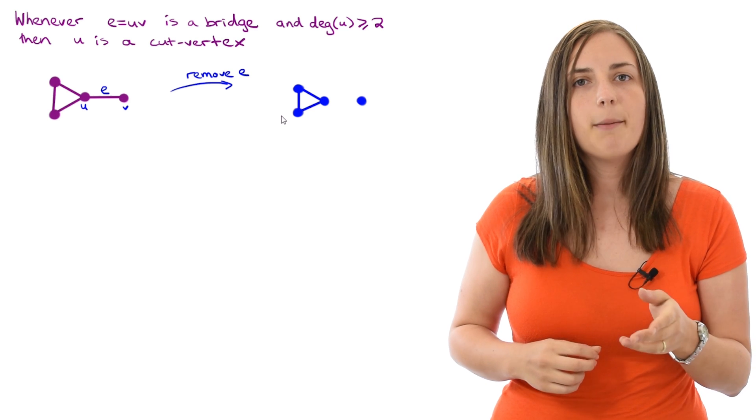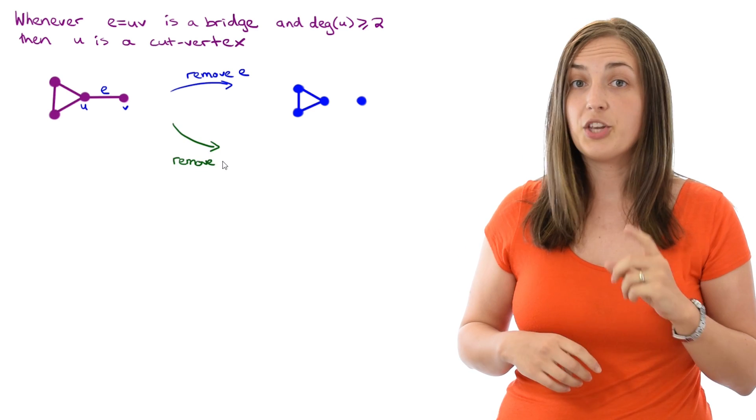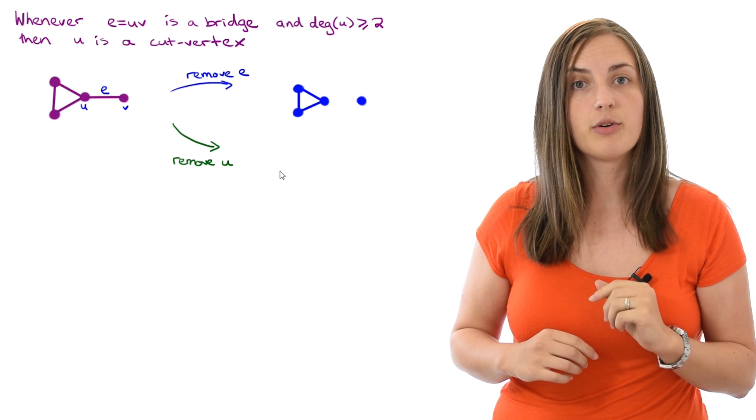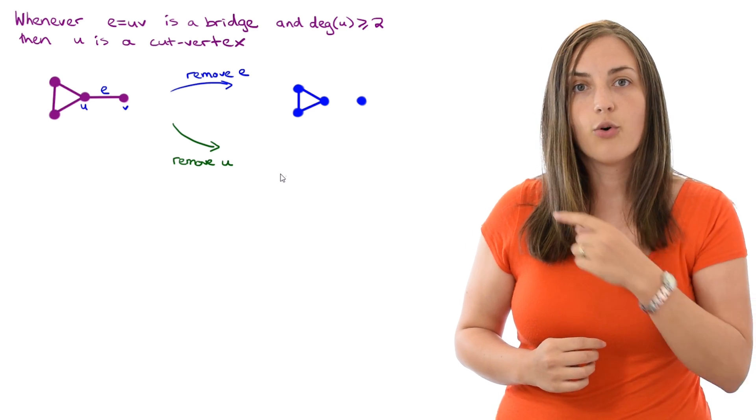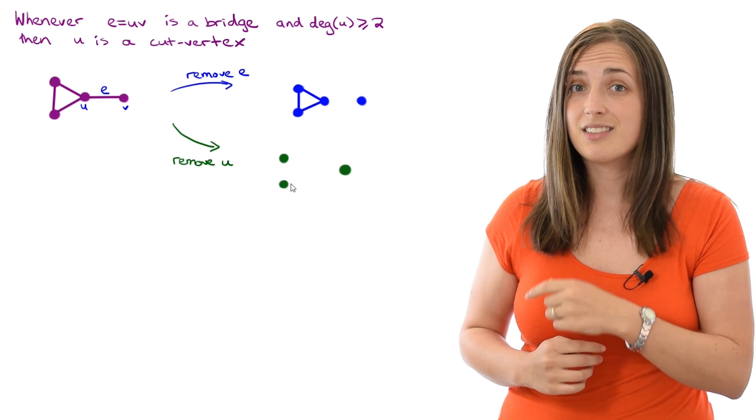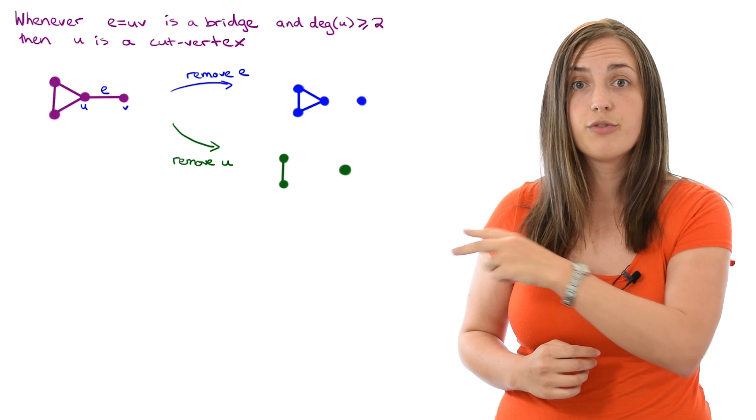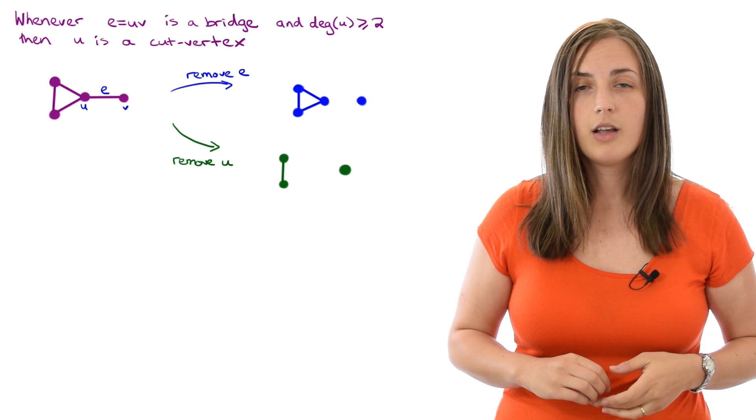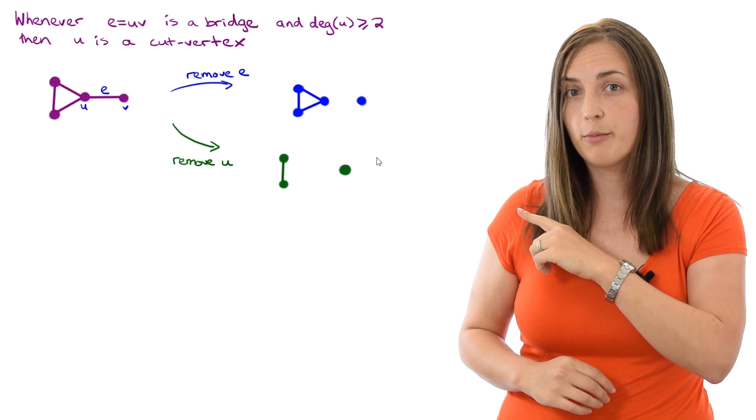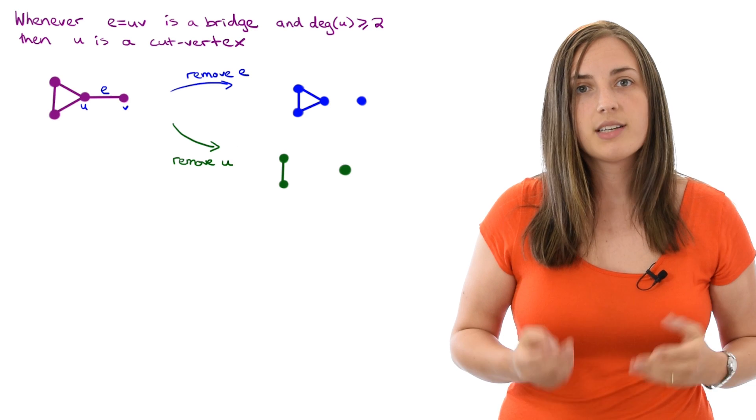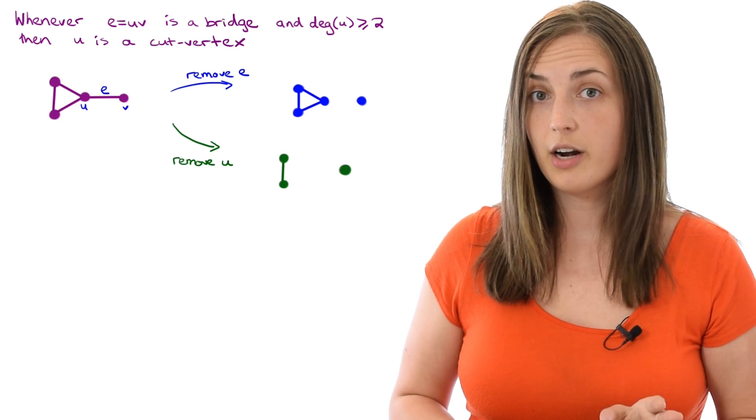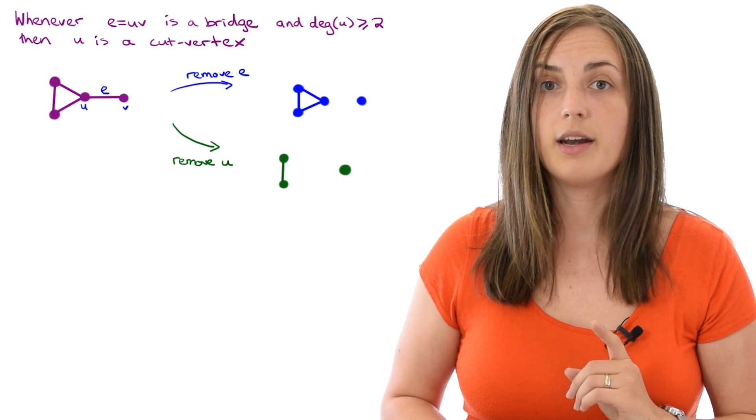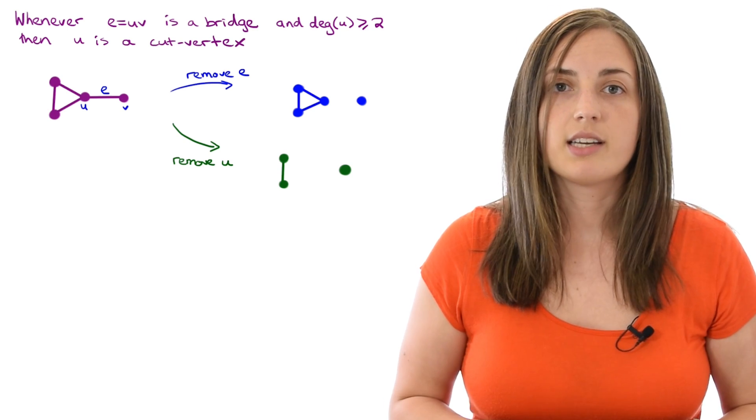Okay, but what happens when you remove the vertex u? When you remove a vertex, you also need to remove all of the edges that used to be incident with that vertex. So the result will look something like this, an isolated vertex and then two vertices connected by an edge. So there is a difference between removing the bridge and removing just the vertex. But you can clearly see that u is a cut vertex. Observe that v is not a cut vertex, it only has degree 1. And if you remove it, you didn't disconnect anything.